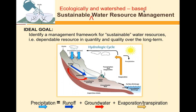What we really need is a new management framework — sustainable, ecologically and watershed-based water resource management — where the goal is to identify a framework for sustainable water resources: a dependable resource in quantity and quality over the long term. The key is the watershed because previously we managed water based on political boundaries. The watershed is the bowl — when it rains, you only get the amount of water that falls in your bowl, and the lip of the hills forms the lip of the bowl.